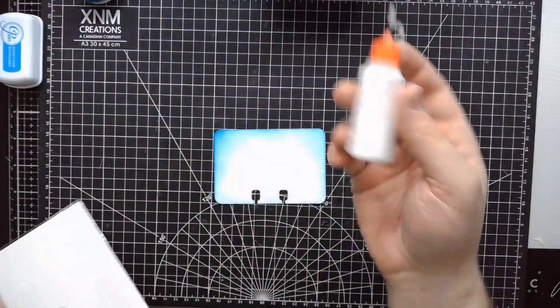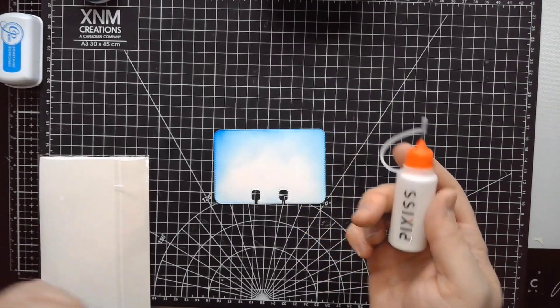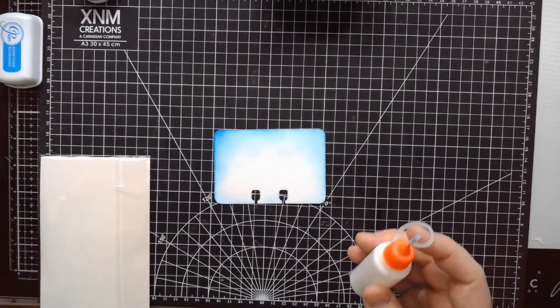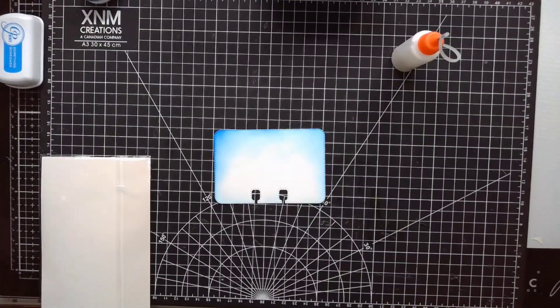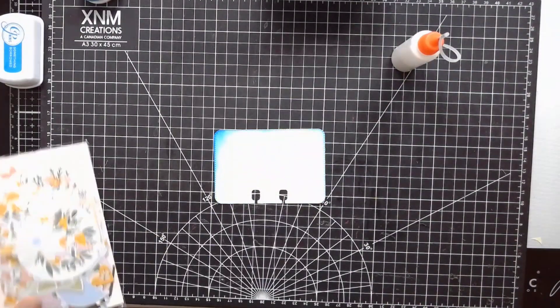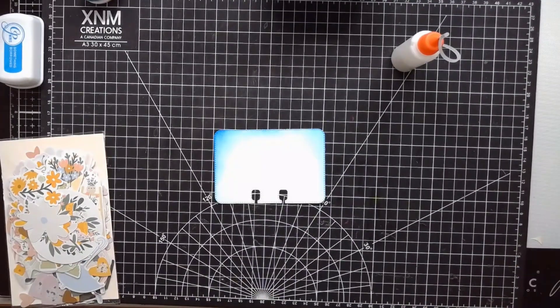I also have a neutral, I think this is Lenco. Yeah, Lenco neutral pH adhesive, which is really good for gluing paper to paper. But let's first get our sentiment down and then figure out what we want to do.